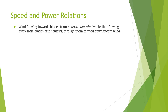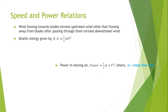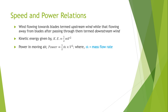Now I will discuss the speed and power relation. Wind flowing toward the blade is named upstream wind, while wind flowing away from the blades after passing through them is termed downstream wind. Kinetic energy is given by the well-known formula ½mv², where m is the mass and v is the velocity. Power in moving air is given by ½ times the rate of change of mass of air multiplied by velocity squared.